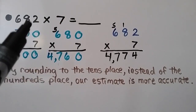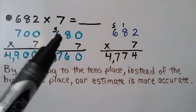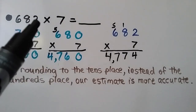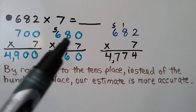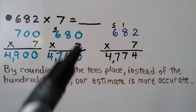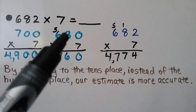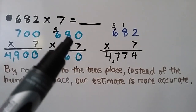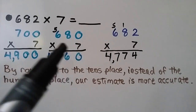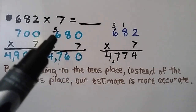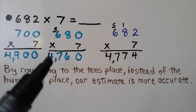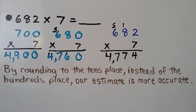But if we round 682 to the tens place, the 2 tells the 8 to stay the same and it becomes a 0, so it rounds to 680. Now we do 7 times 0, which is 0. 7 times 8, which is 56 — we regroup the 5 and put the 6 down. 7 times 6 is 42, plus 5 more is 47. Our rounded estimate gives us 4,760.